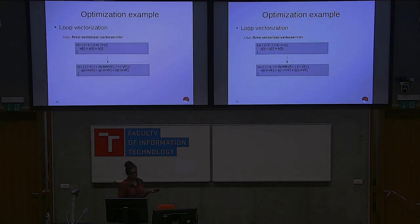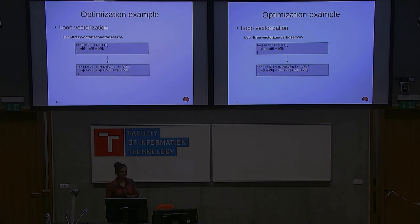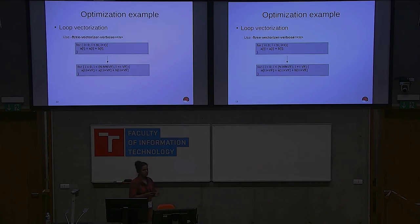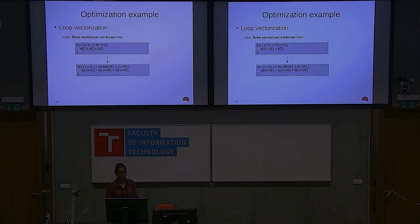Then we have loop vectorization, which is a machine-dependent optimization where normal simple arrays are split into vectors. For this to work, your architecture needs to have SIMD support. You break the entire computation into vectors — for example with four processors, the four vectors can be run in parallel on different processors. It's helpful only when your system has support for such things.